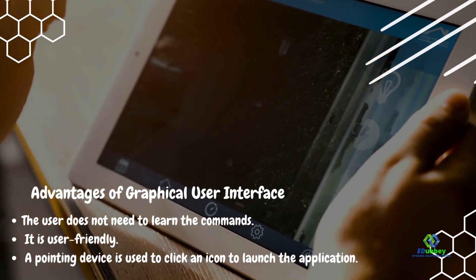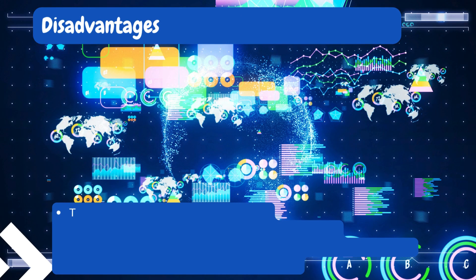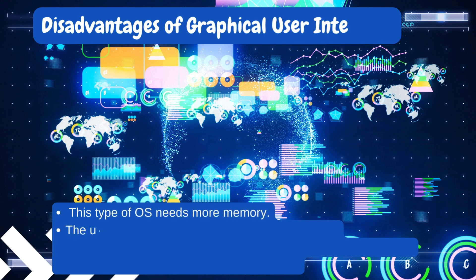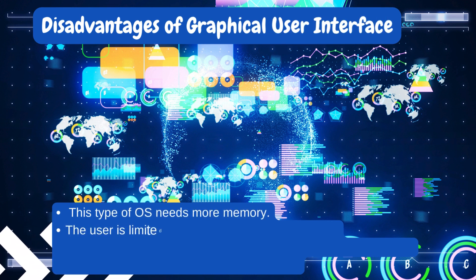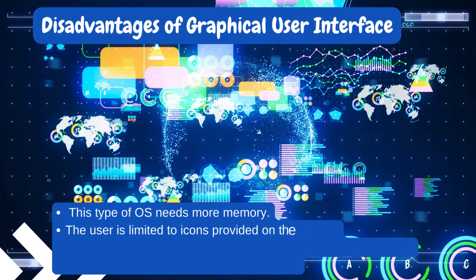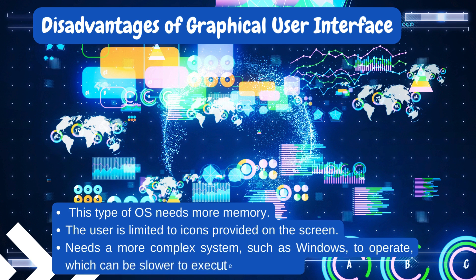The disadvantages of GUI are: 1. This type of OS needs more memory. 2. The user is limited to icons provided on the screen. 3. It needs a more complex system, such as Windows, to operate, which can be slower to execute commands.